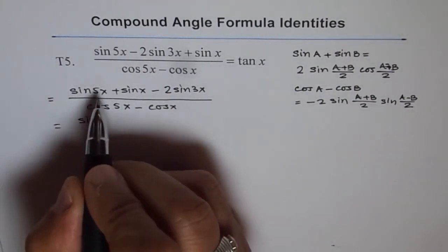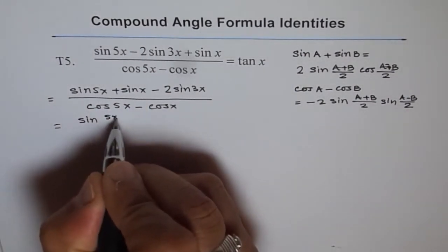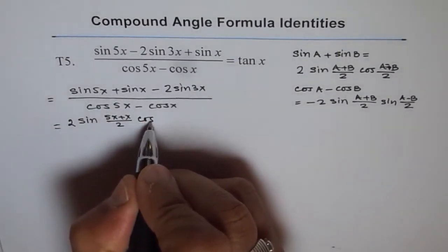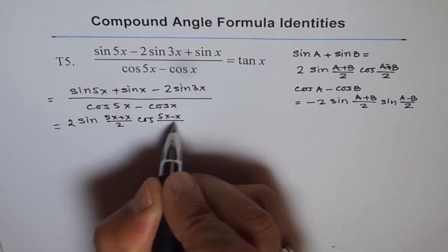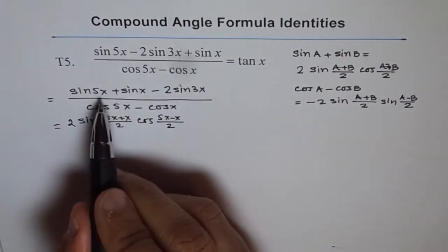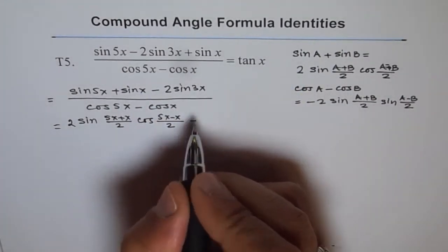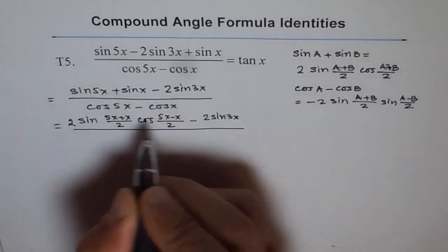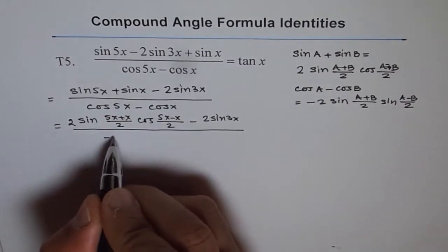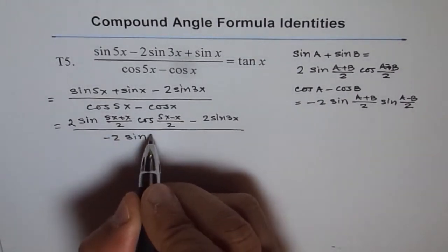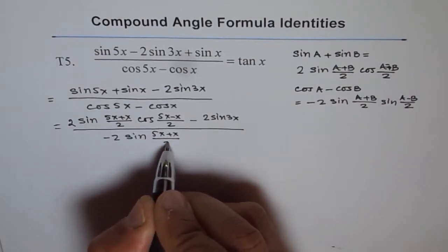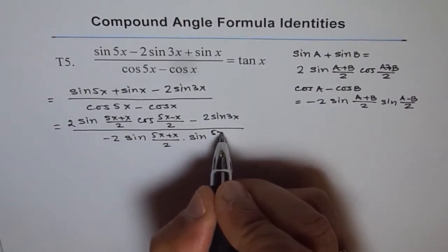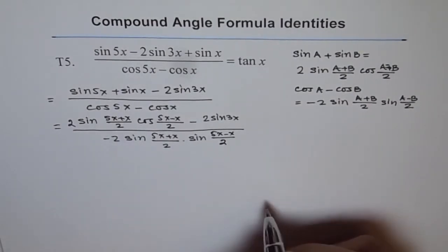Applying the formula to sin 5x plus sin x: we get 2 sin((5x+x)/2) cos((5x-x)/2), converting the sum to product form. Minus 2 sin 3x is our numerator. In the denominator we apply the cosine formula and get minus 2 sin((5x+x)/2) sin((5x-x)/2).